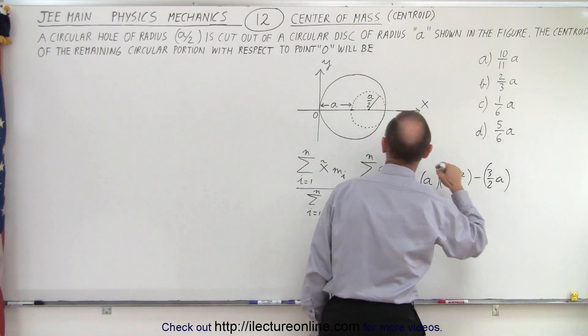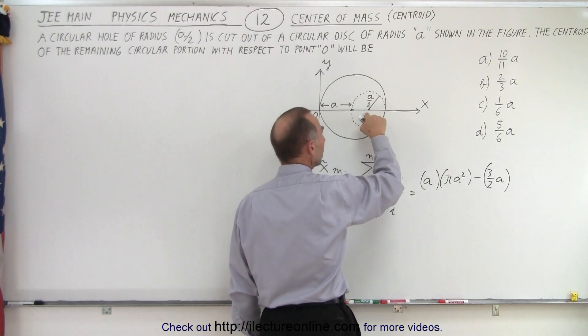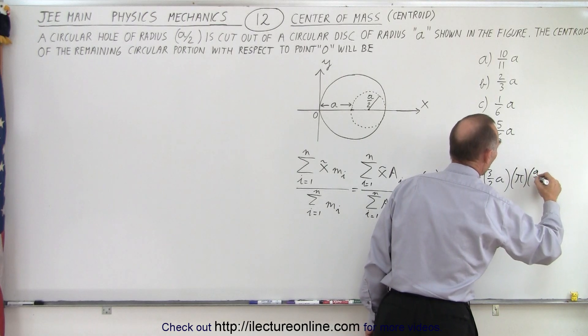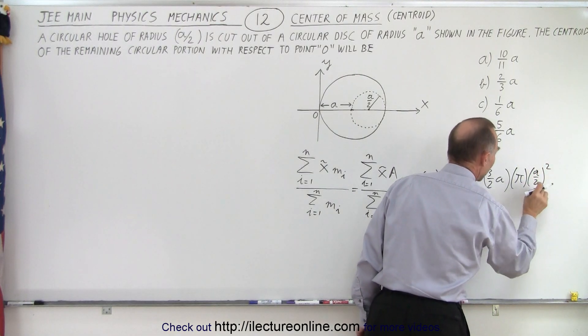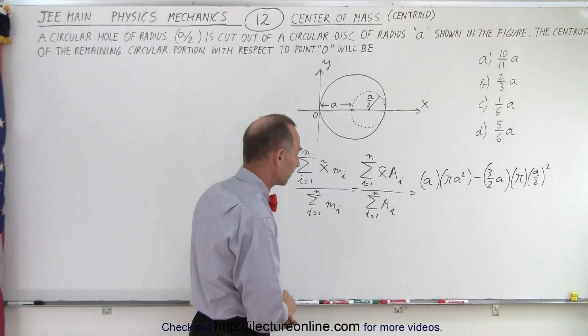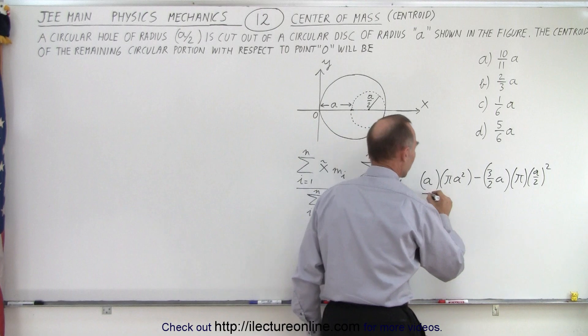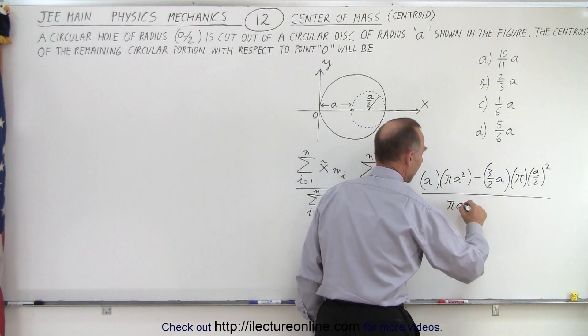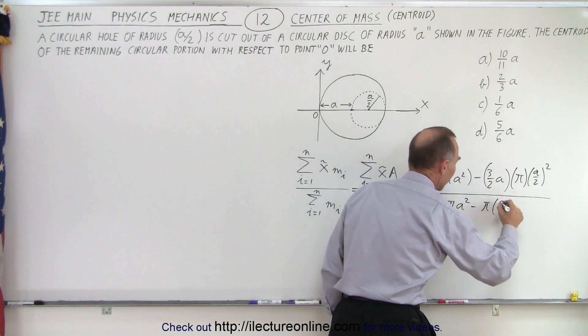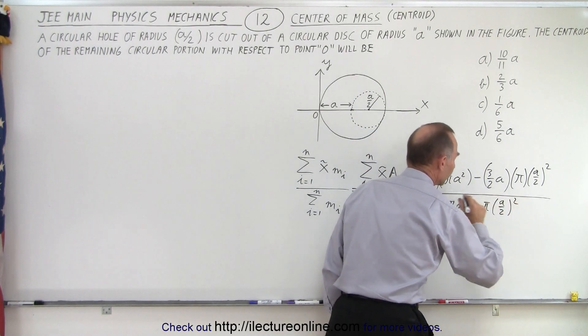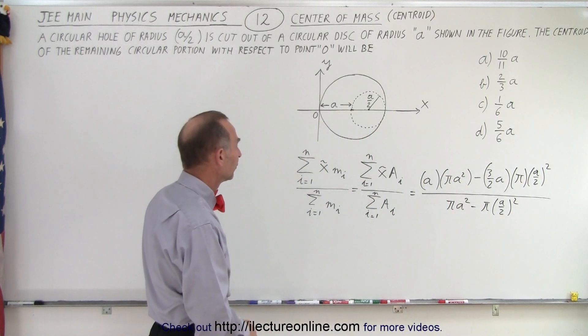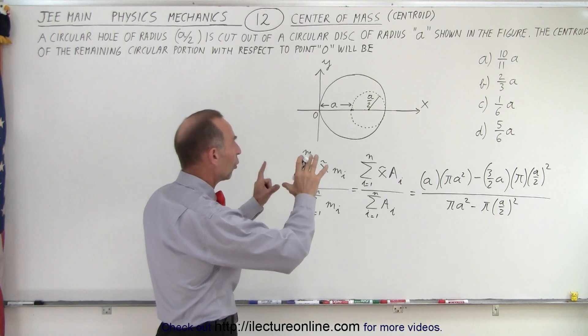That would be the distance to the centroid of the hole times the area of the hole, which would be pi times a over two squared, the radius squared times pi for the area of the hole. Let's subtract again because it's missing. Divide by the sum of all the areas, that would be pi a squared for the complete disk, minus pi times a over two squared for the hole. And that will give us the centroid of the disk with the hole cut out.